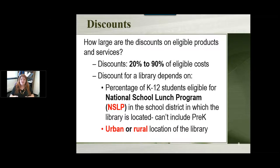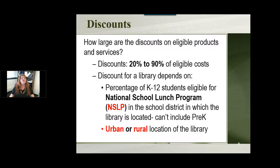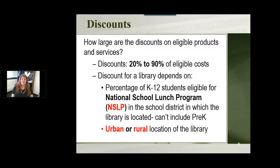The discount is based on the National School Lunch Program — the free and reduced lunches that children receive in school districts. The FCC needed something to determine which areas are neediest, and they decided that if more children are eligible for the school lunch program, that's a needier area deserving a higher discount. Key to note: it's the number of students eligible, not the number who actually apply, since some eligible families choose not to. You also cannot include pre-K kids — it's only kindergarten through 12th grade.